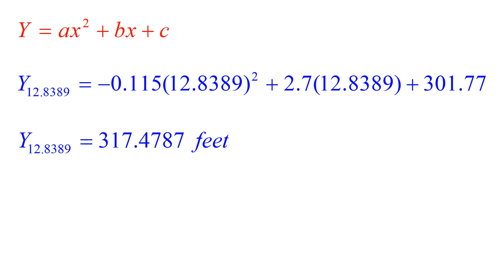So that's the elevation at the station we were given, 104+22, which has an x value of 12.8389 stations.